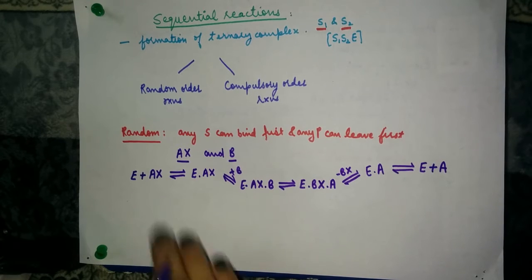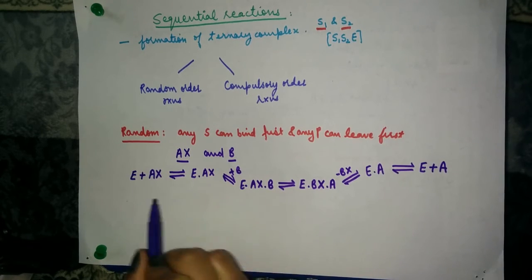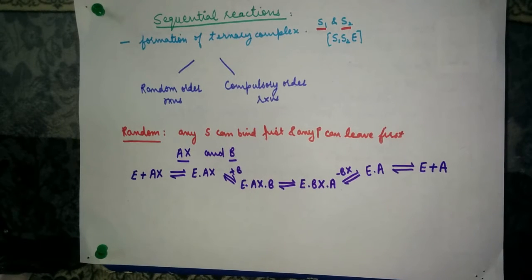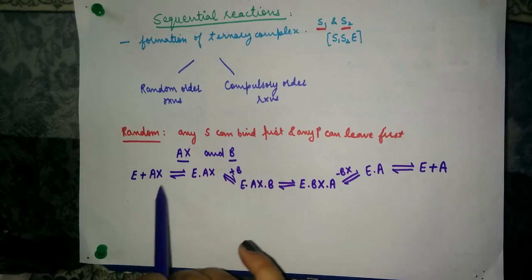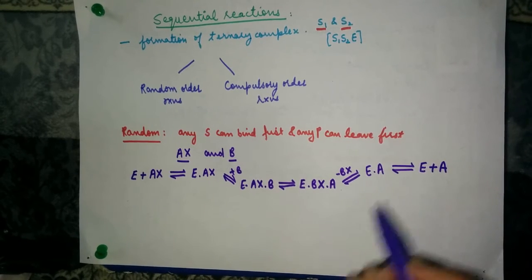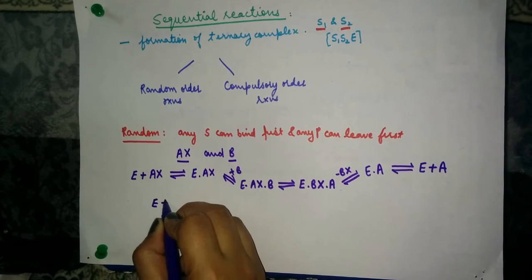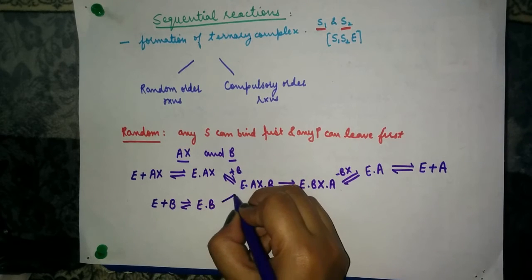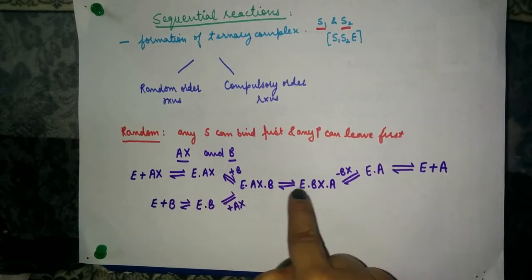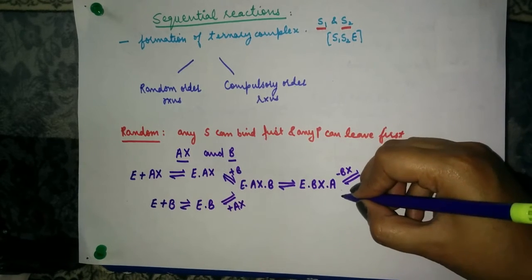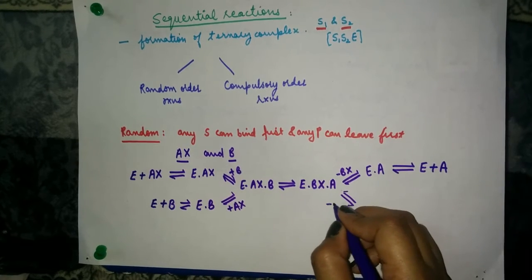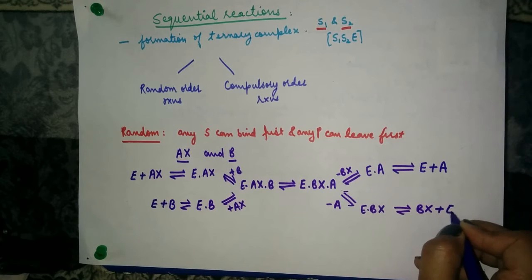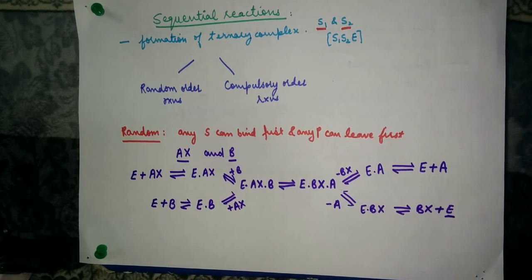In this representation, AX was the first substrate, B was the second, BX was the first product, and A was the second product. It is also possible that the other substrate binds first. If substrate B binds first, we get E-B complex; then AX binds forming the ternary complex. After reorganization, the first product A is released forming E-BX, then BX leaves and the enzyme is returned to its initial state.